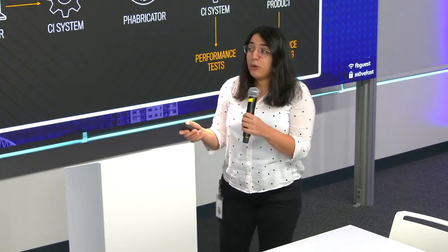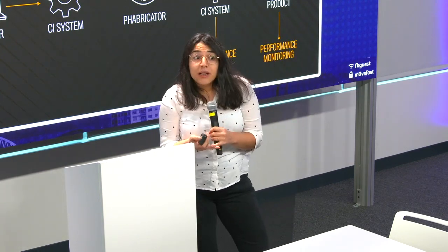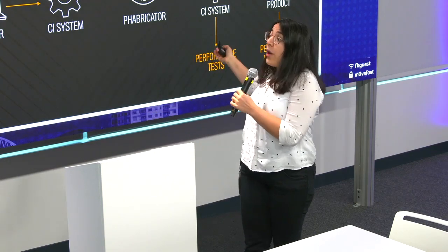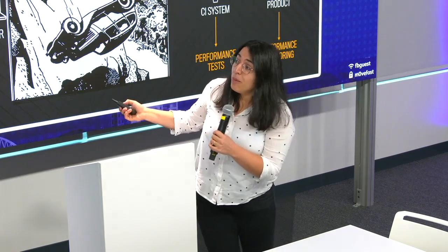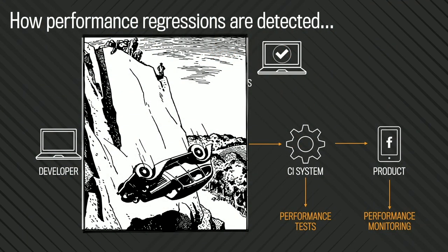So then developers would be doing lots of performance monitoring and try to see if there have been any critical performance regressions. And then you'd see, okay, oops, there might be a performance regression, but it's already too late. It's like a car just going down off a cliff, and this is the user, and these are the perf engineers looking like, what happened? It's like doing a post-mortem and trying to understand what could have gone wrong.